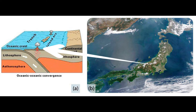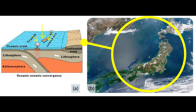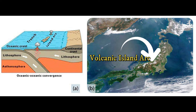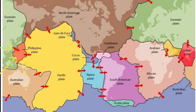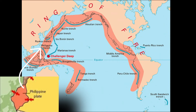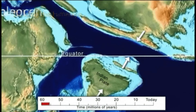This is a continuous process. Since the plates are moving, the volcano will move with the plate. It becomes extinct when it is no longer above the magma deposit in the mantle, and a new volcano will then be formed. This series of volcanoes is called a volcanic island arc since it is surrounded by water. This explains why the Philippines is mostly loaded with volcanoes — the different islands were believed to have originated from the convergence of two oceanic crusts.